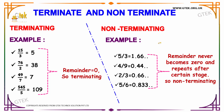On the other side, for non-terminating: 5 ÷ 3 gives 1.666... and it goes on. Similarly, 4 ÷ 9 gives 0.444... and it goes on. 2 ÷ 3 gives 0.666..., which is non-terminating. And 5 ÷ 6 gives 0.8333... and it goes on again. These are examples of non-terminating decimals, where the remainder never becomes 0 and the digits keep repeating after a certain stage.